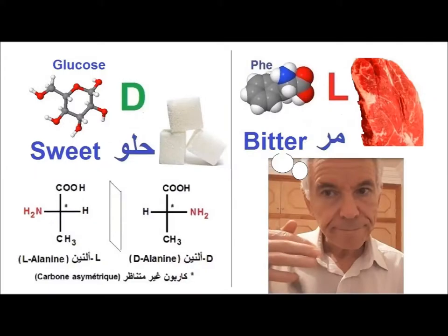Let's speak about sugars and protein tastes. As you know, proteins are formed by amino acids — 20 different amino acids. Unlike simple sugars, amino acids present configurations L and D because of the presence of an asymmetric carbon, as you see here in the bottom of this figure.